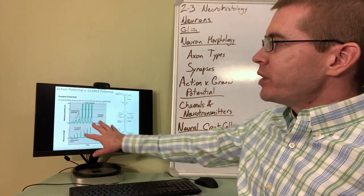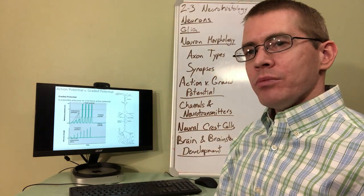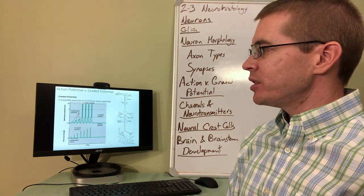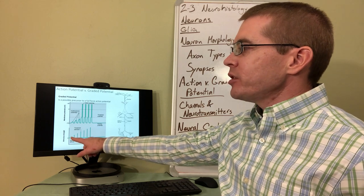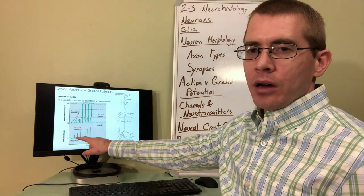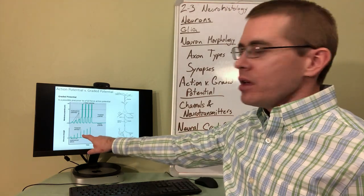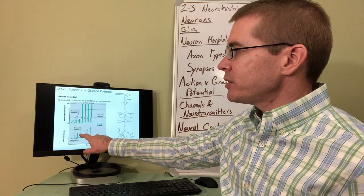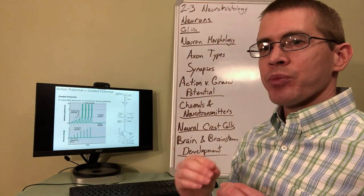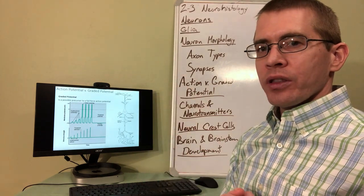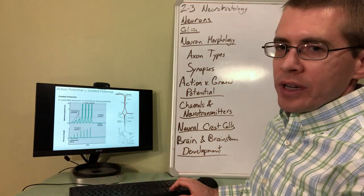In this electrographic plot we can see how multiple graded potentials can add up to become an action potential. The first three sub-threshold stimulus peaks are not strong enough to produce a full action potential. But once the threshold is reached and stimulation is strong enough to hit the threshold potential, an action potential is created. That action potential always reaches a certain strength of depolarization and propagates across the entire axon, transmitting information to the next neuron in the chain.